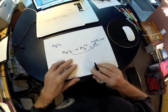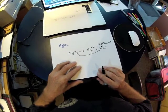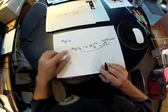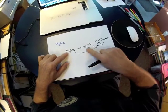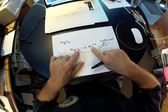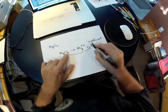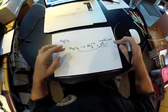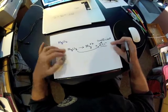Checking whether the equation is balanced: we have one Mg on the left side of the arrow and one Mg on the right. We have two Cl's on the left and two Cl's on the right. So this is a correctly written ionization equation.